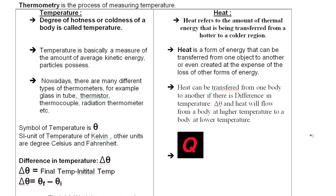If we increase the average kinetic energy, it means we have increased the temperature. If we decrease the kinetic energy, the temperature decreases. For example, ice has less kinetic energy in its particles, so the particles are mostly fixed. In water, the particles are mobile and moving. In gases, where temperature is higher, particles are continuously and randomly moving with greater average kinetic energy.